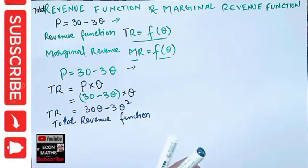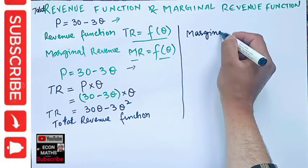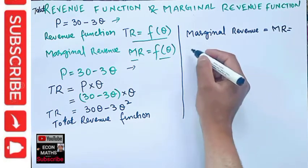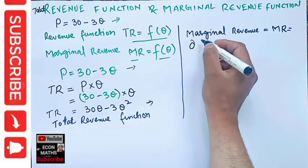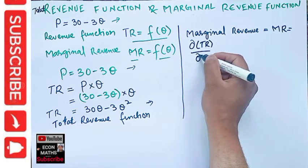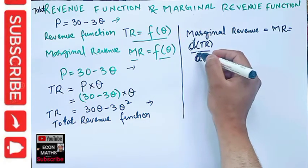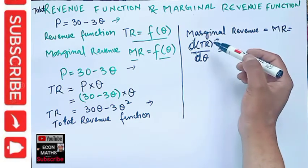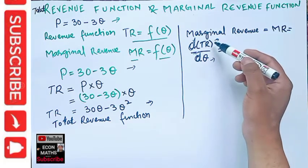From the total revenue function, we can find the marginal revenue function. Marginal revenue, denoted MR, is simply the derivative of the total revenue function with respect to quantity — that is, dTR divided by dQ. This is not a partial derivative. It tells us how much additional revenue we get by selling one extra unit of the product — the change in total revenue with a one-unit change in quantity.